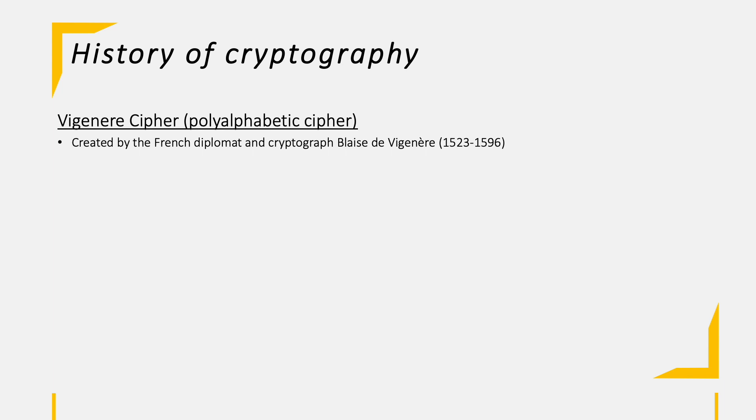So it took more than 1600 years until a French diplomat and cryptographer called Blaise de Vigenère stepped into the game and came up with a polyalphabetic cipher.